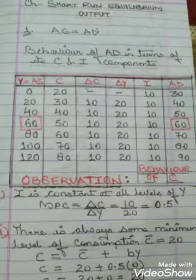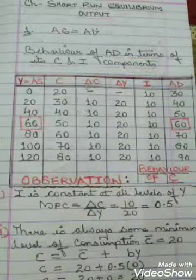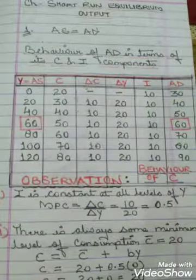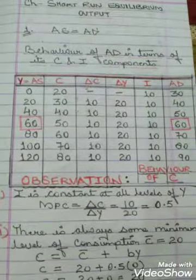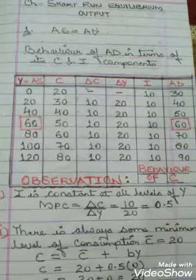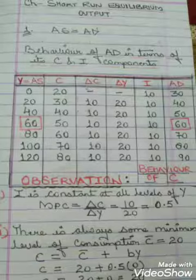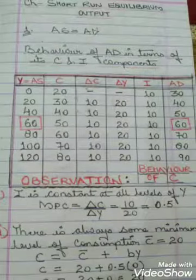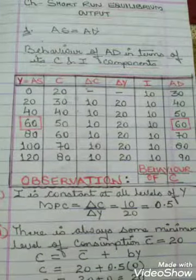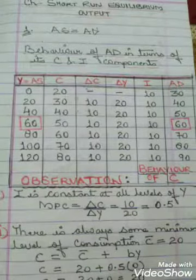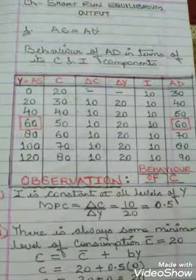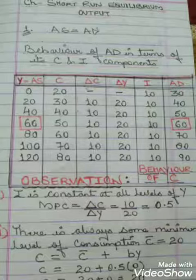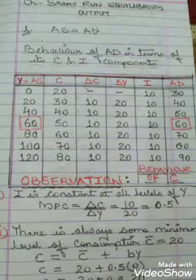In the table, income increases from 0 to 120. When income is 0, we still have some consumption of 20, which is known as autonomous consumption — even with zero income, consumption continues through borrowing or other means. Investment I is constant at 10 at all levels of income. So our MPC equals delta C upon delta Y, which is 10 upon 20, that is 0.5.